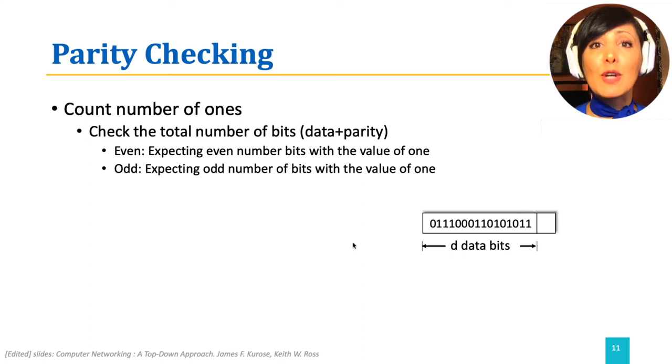So, for example, in the figure, if we are using an even parity mechanism, we expect an even number of ones in the d plus one bits. We do have nine ones here. Therefore, the parity bit at the sender will be set to one. If when received at the receiver, we count an odd number of ones, we will detect an error. If the counting at the receiver shows an even number of bits, we conclude no errors.